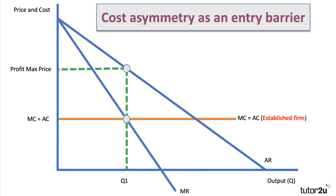One way of looking at this is to use cost and revenue curve analysis — a good way of getting high marks in your A-level and IB answers. I've assumed constant cost here, so marginal and average cost of production is constant, which saves drawing all the fiddly cost curves. Basically, the supply curve is the cost curve for the established firm.